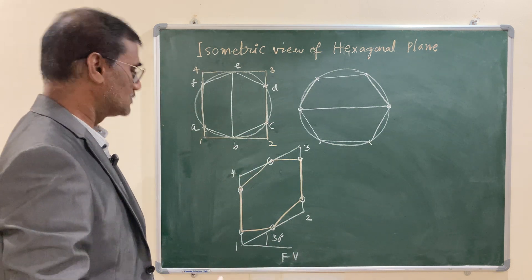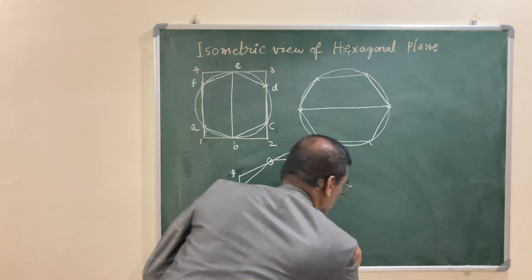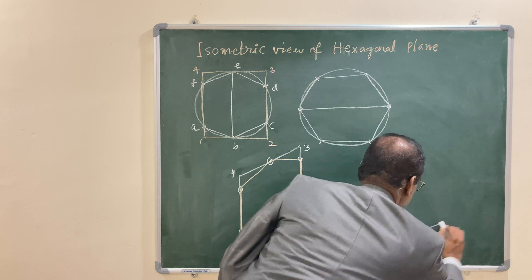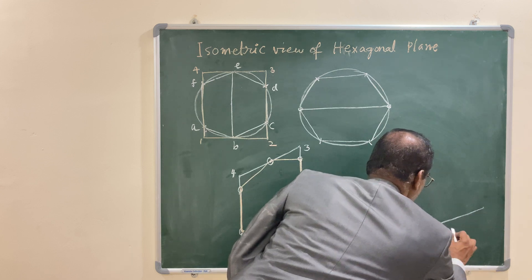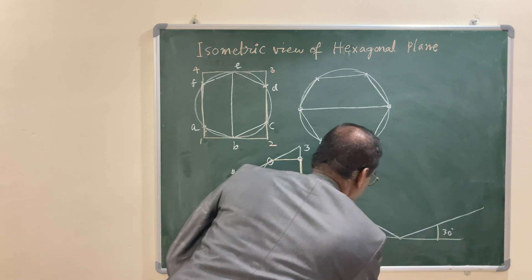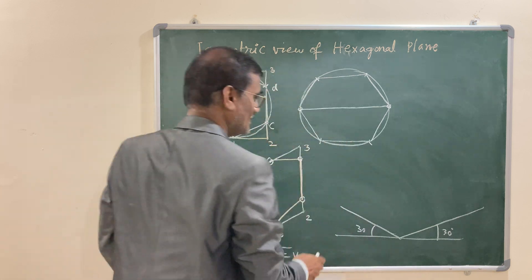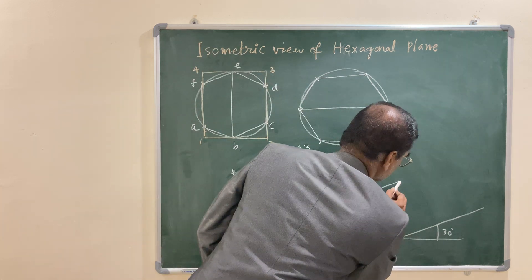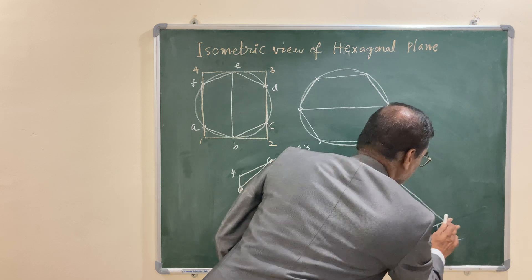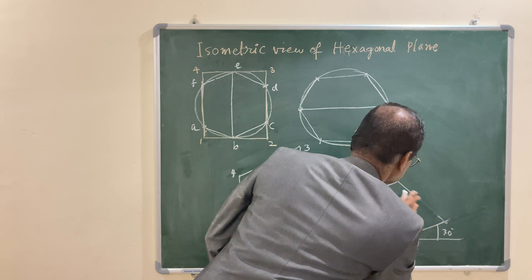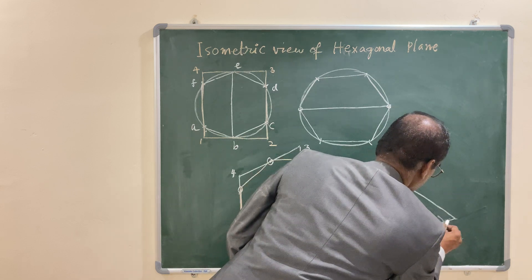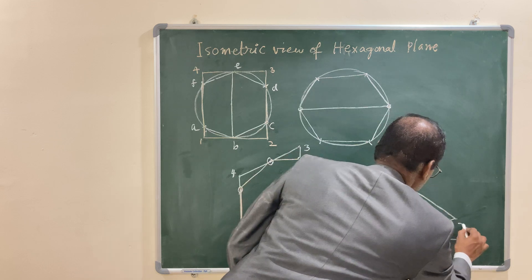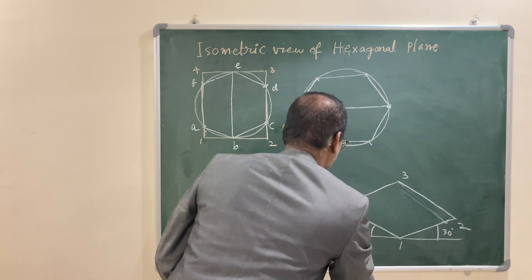If it is in top view, you have to take the horizontal reference line to the right at an angle 30 degrees and to the left also at an angle 30 degrees. And complete this parallelogram 1, 2, 3, 4 and give the numbering that is 1, 2, 3 and 4.